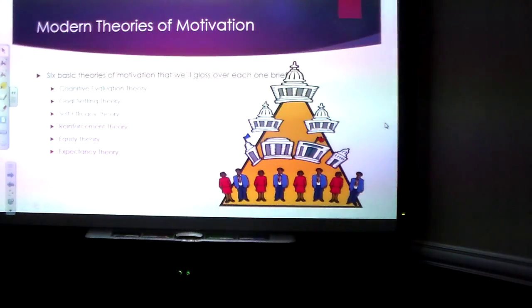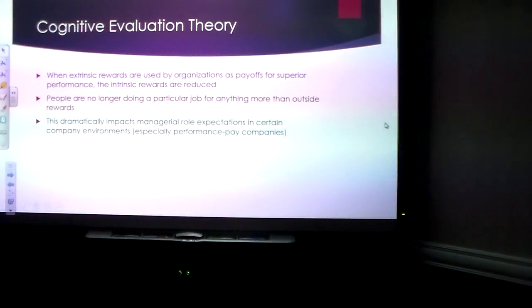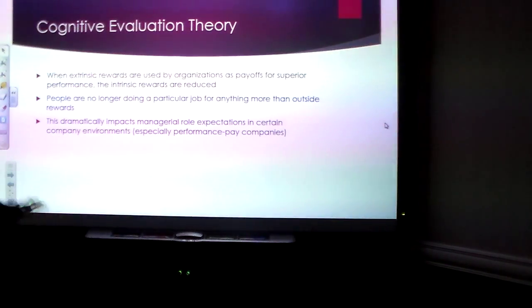We have some six modern theories of motivation. I'm going to talk about each one of these briefly. Cognitive evaluation theory is that if you do extrinsic rewards, more pay, more perks, more benefits, then people come to expect it, and they don't want to do the job for making them feel good. They do the job for rewards more than anything else. So if you're in a performance pay occupation, this can be a problem especially for role expectations on who and what a manager is, and what's expected of a manager, and what they're supposed to do.